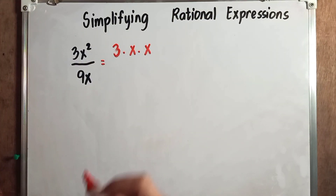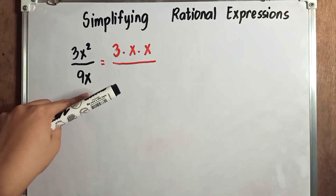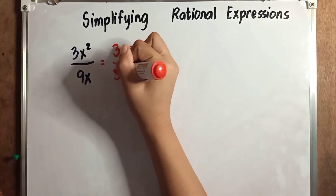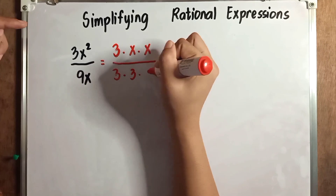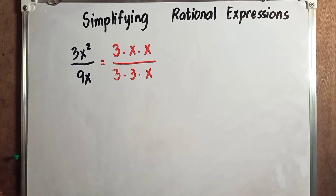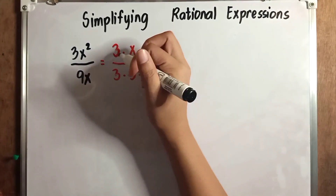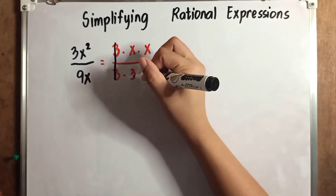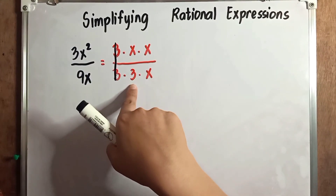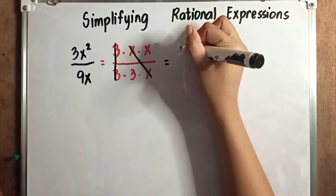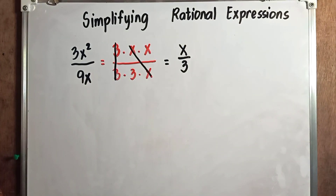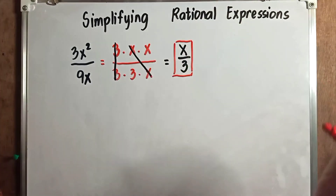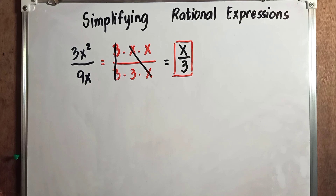Next, the prime factor of 9 is 3 times 3, and then copy the variable x. After that, we cancel out the common factors. We have 3 divided by 3, so those cancel out. Then x cancels with x. What remains is x over 3. So when asked to simplify 3x squared over 9x, the final answer is x over 3.